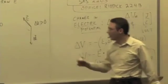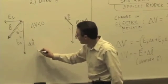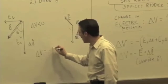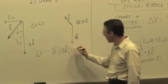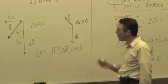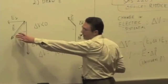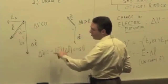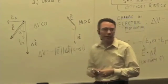And also the other way we can think about it is the angle. If that's theta, then we can say delta V is negative E times magnitude of E times the magnitude of delta L times the cosine of the angle between them. In this case, the cosine is positive, so you get a negative delta V. In this case, the cosine is negative, you get a positive delta V.